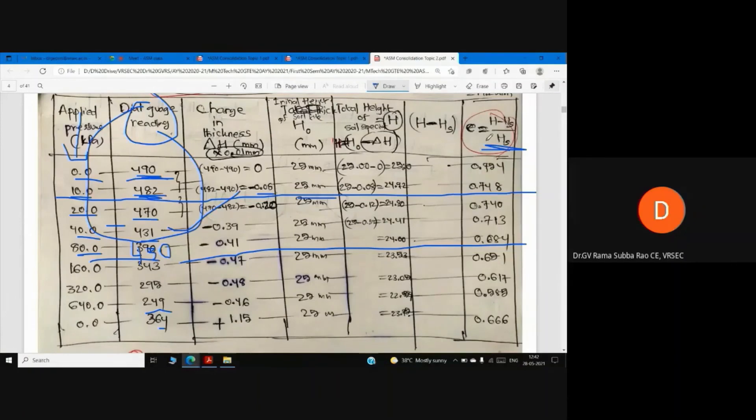In our dial gauge readings, we have void ratio E versus sigma dash graph, and we determine Cc, Cv, etc.